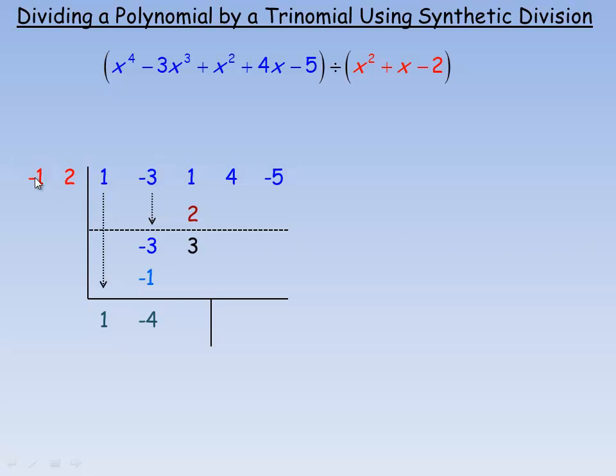Now we once again multiply negative 1 by negative 4, and of course that's positive 4. So we put that here. 2 times negative 4 is negative 8, so that will go up here. And we add again. 3 and 4 add to 7. 4 and negative 8 add to negative 4.